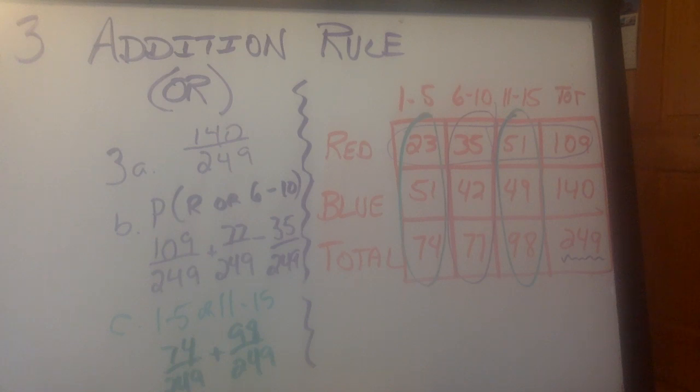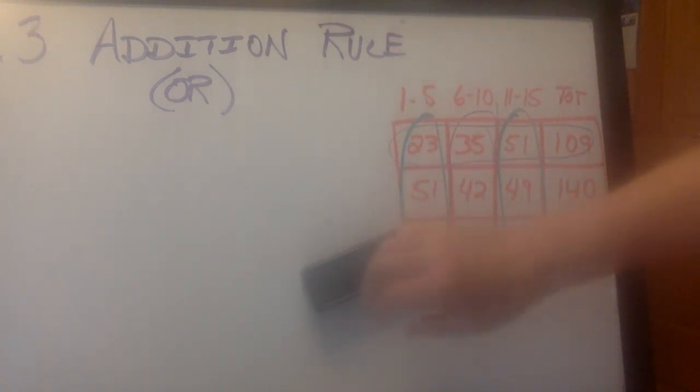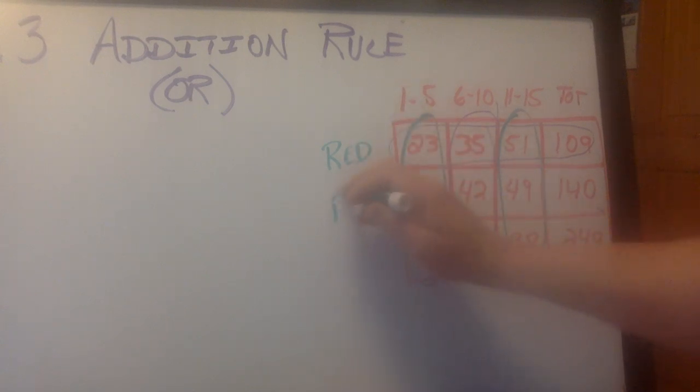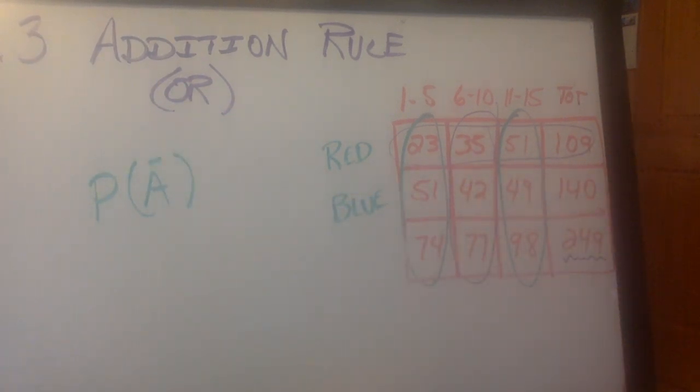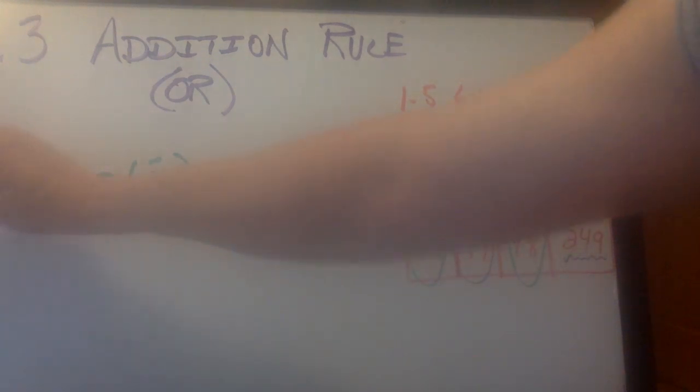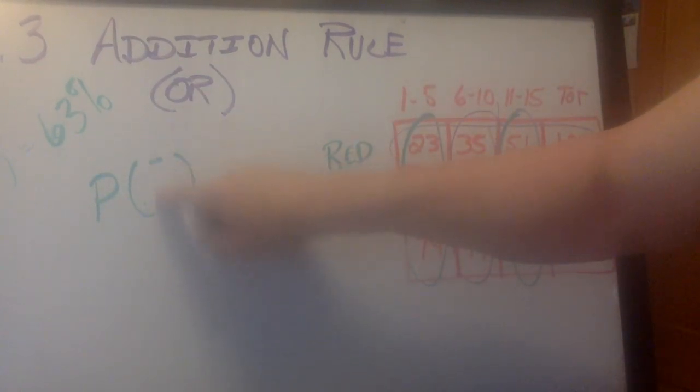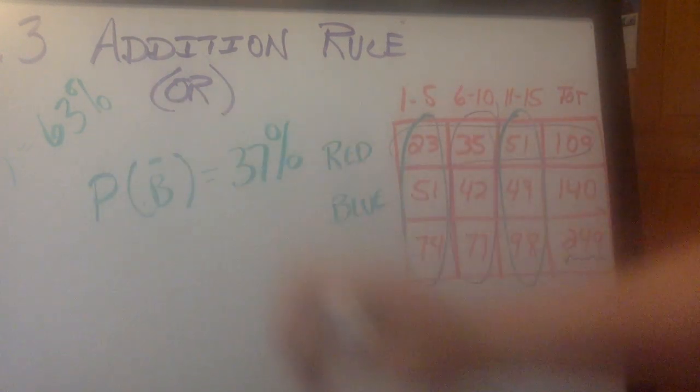Then we go to the back page. We're reviewing complements. The probability of not A. That just means it's not A. Our example is eating broccoli is 63%. The probability of eating broccoli is 63%. So what's the probability of not eating broccoli? That'd be 37%. 37 plus 63 is 100%. That's all that is.